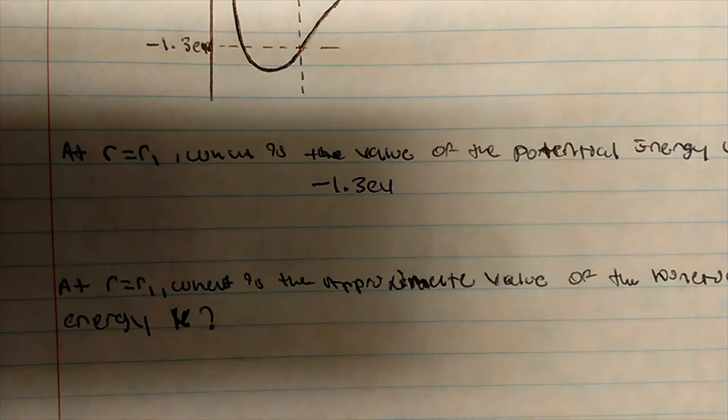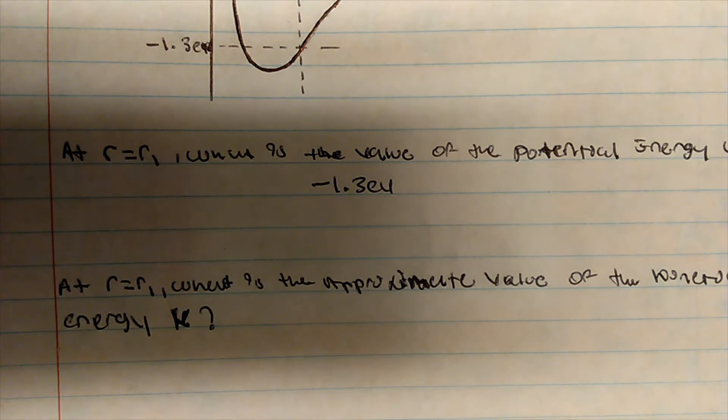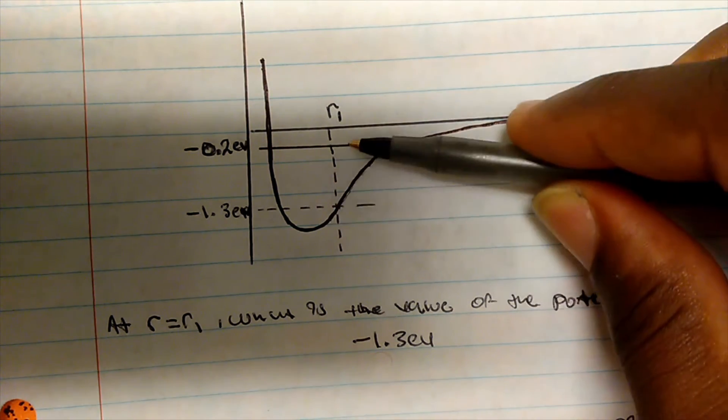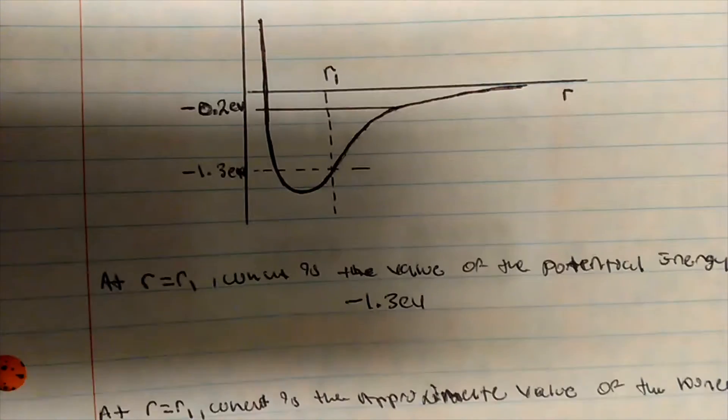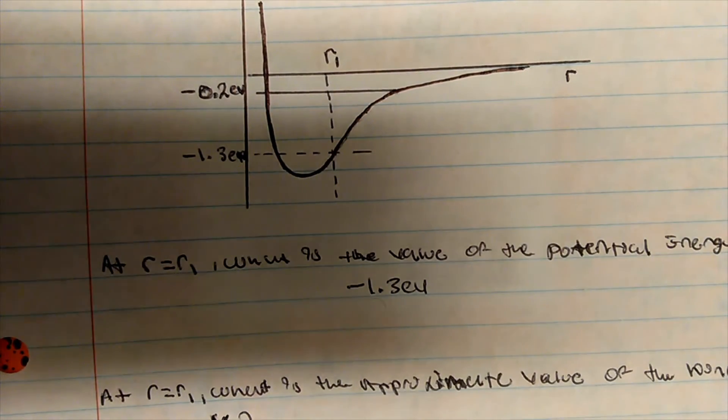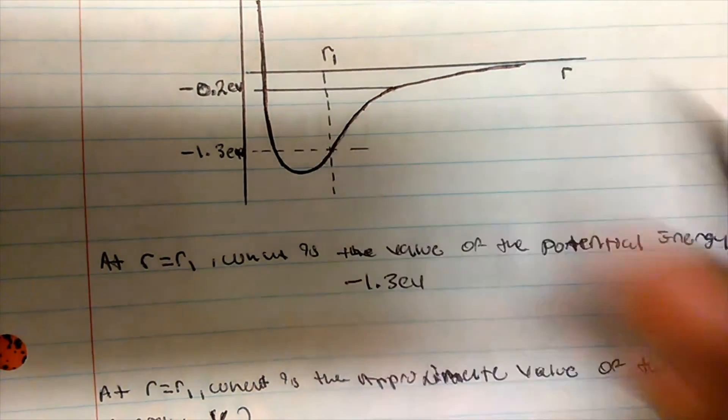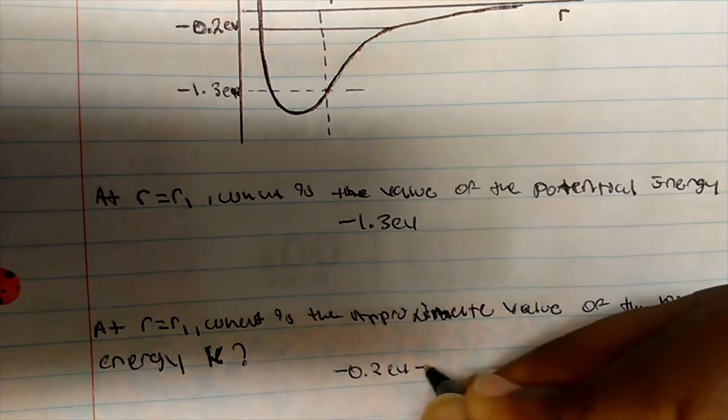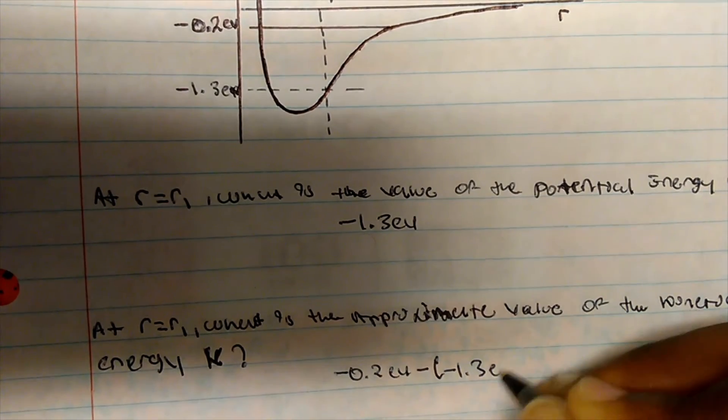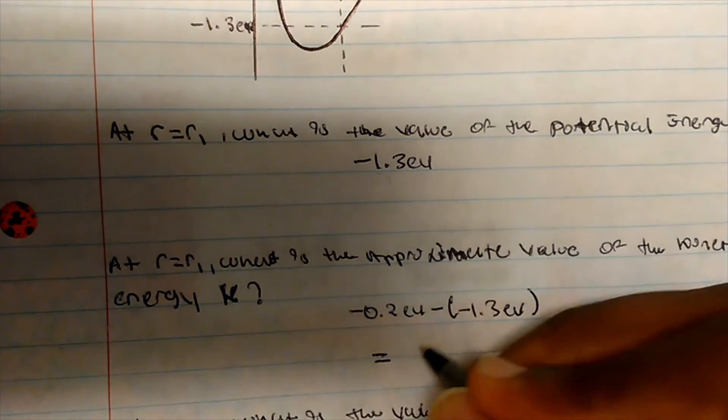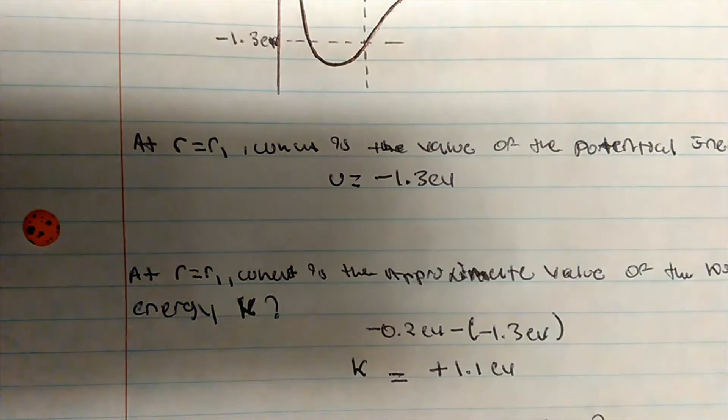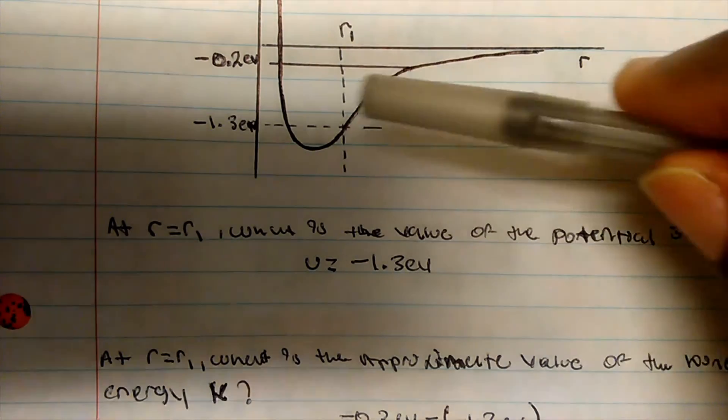Now, what is the approximate value of the kinetic energy? We already talked about how kinetic energy is right in between our potential energy and this line here. My kinetic energy has to be positive, so there's a change here. My kinetic energy has to be negative 0.2 eV minus negative 1.3 eV. If I do the math, I get positive 1.1 eV, so this would be the value of my K.